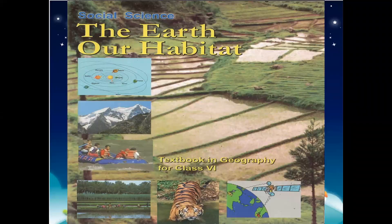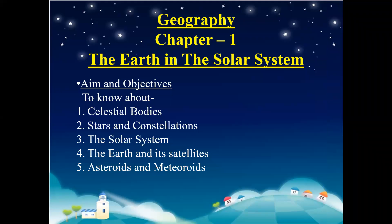Hello students. Today we will do the explanation of Geography, Chapter 1, The Earth and the Solar System. In this chapter, we will cover the following topics: celestial bodies, stars and constellations, the solar system, the Earth and its satellites, and asteroids and meteoroids. So let us proceed with the explanation.